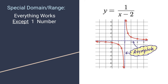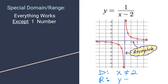The domain is all the x values that are not equal to 2. For the range, the graph goes all the way up and all the way down, but it skips the y output of zero. Because if you take 1 divided by something, you're always going to have something in the denominator, so this graph never equals zero for the output. So the range is all y values that are not equal to zero.